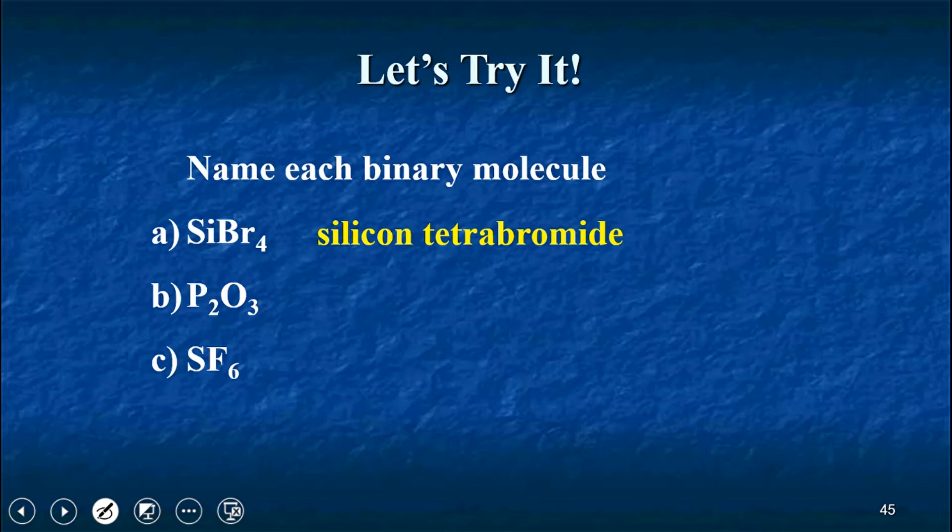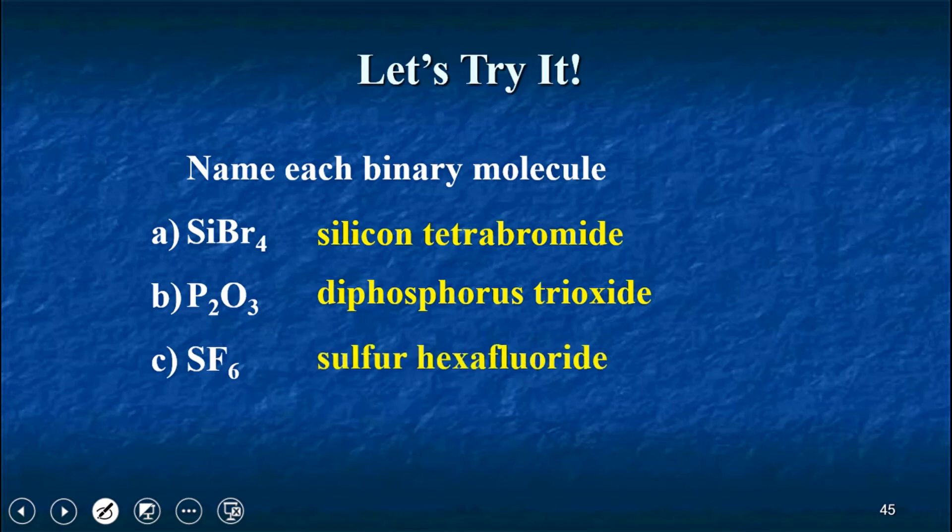How about P2O3? I know, you're probably going to say something, but it is diphosphorus trioxide. Diphosphorus trioxide. Next one. Tick tock, tick tock. Here we go. Sulfur hexafluoride. Don't confuse hexa, which is for six, and hepta, which is for seven.